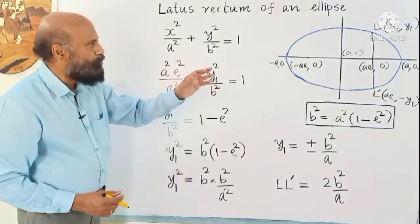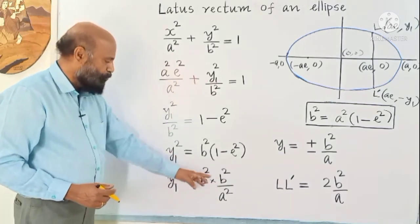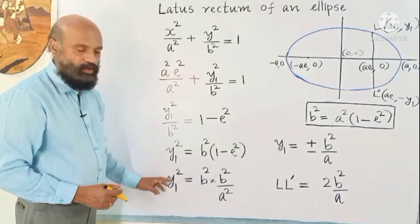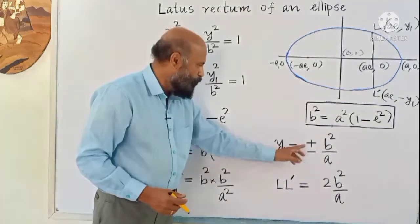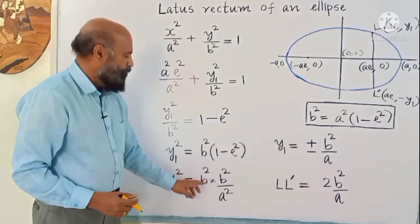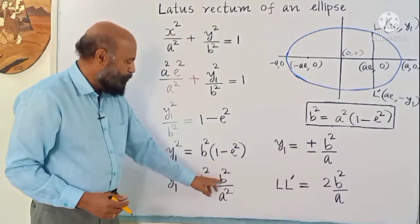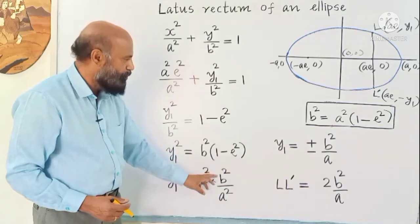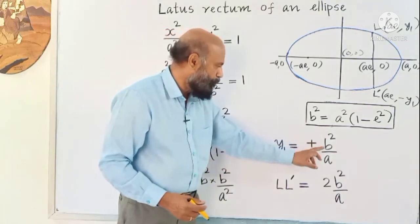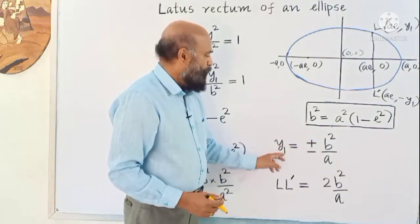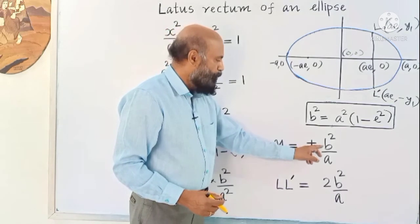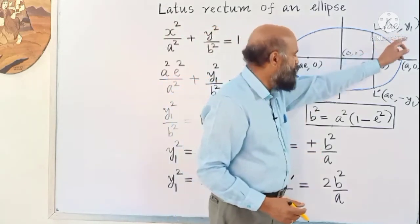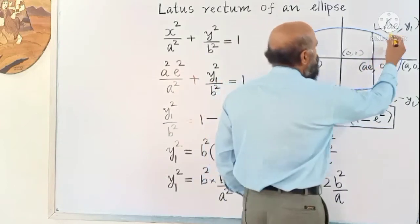Our aim is to find y₁, so we take the square root on both sides. y₁² = b⁴ / a², and taking the square root gives y₁ = ± b² / a.